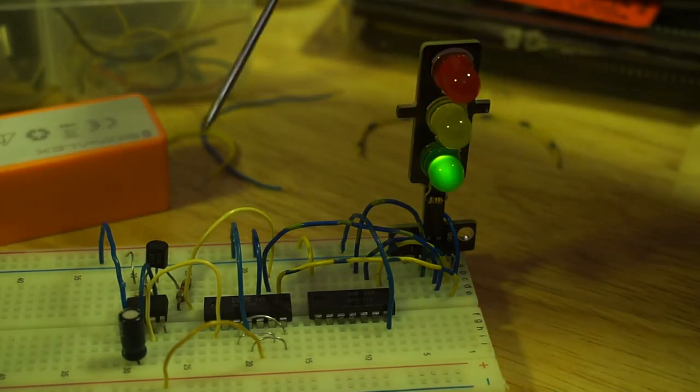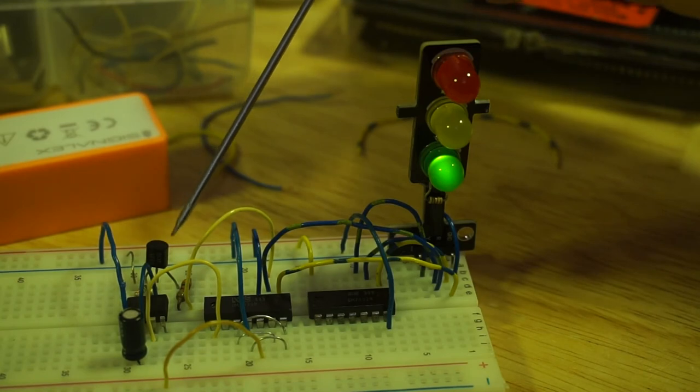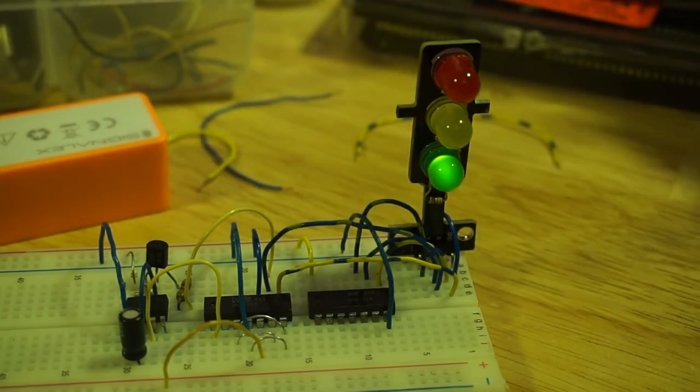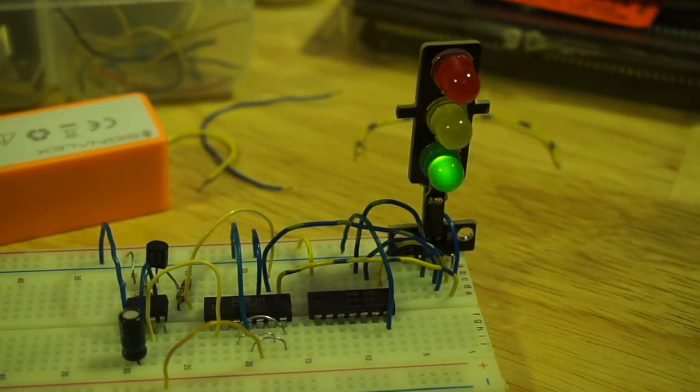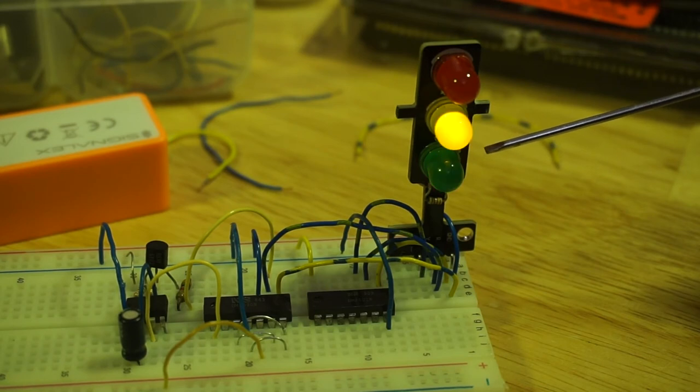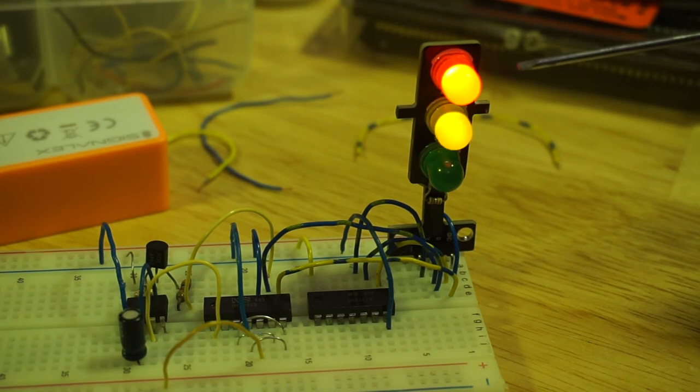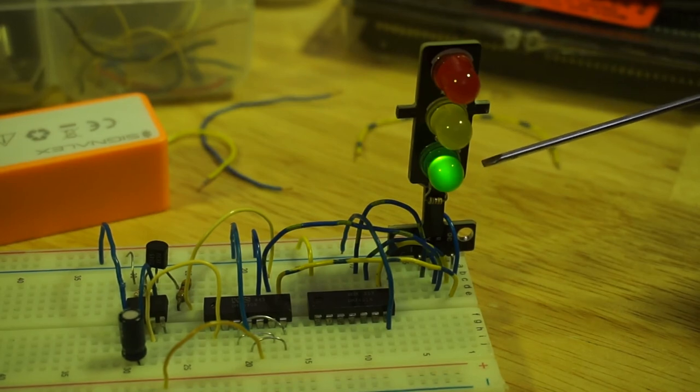So I have a 10 microfarad capacitor in place on the 555 timer. And that now slows the entire process down. So this green LED now stays on for more than 10 seconds. This stays on for just a second or so. The red stays on for at least seven seconds, I think. And before the yellow turns back on, but only briefly before we go back to the green.